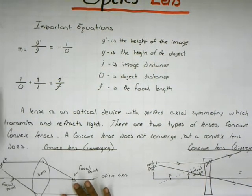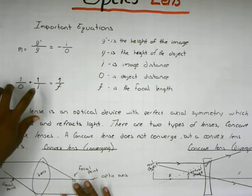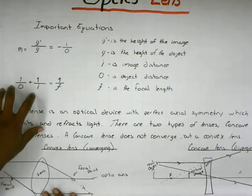The other equation is 1 over o plus 1 over i equals 1 over f, where f is the focal length.